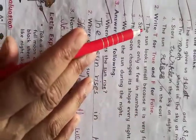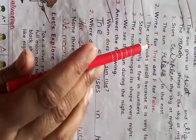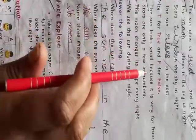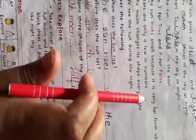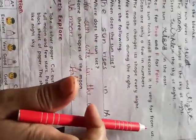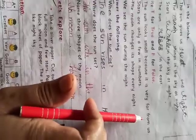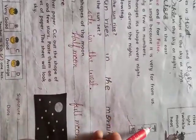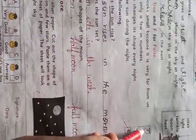Exercise two: write T for true and F for false. First: the sun looks small because it is very far from us. The sun looks small because it is very far away from us — so this one is true, write T.